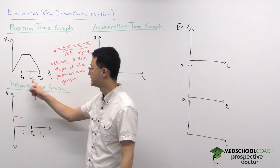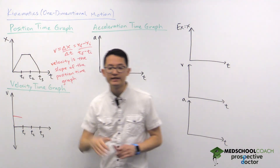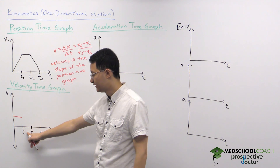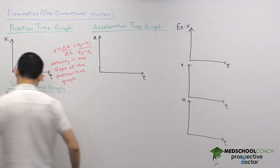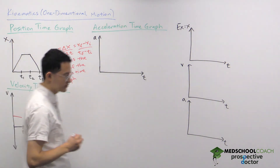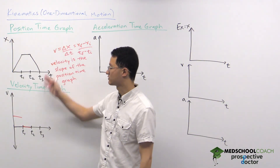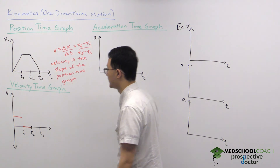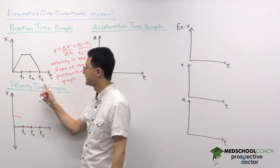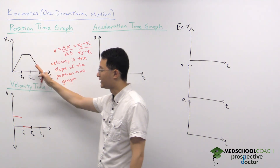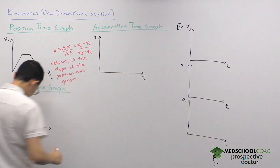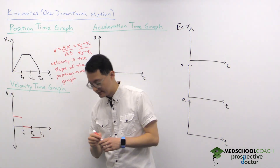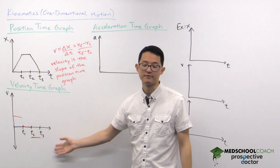From T1 to T2, the position-time graph is a flat horizontal line with no slope, meaning velocity is 0 — which makes intuitive sense since the object didn't move. From T2 to T3, the slope is negative but constant, so the velocity-time graph takes on a negative constant value. This is essentially what our velocity-time graph looks like.